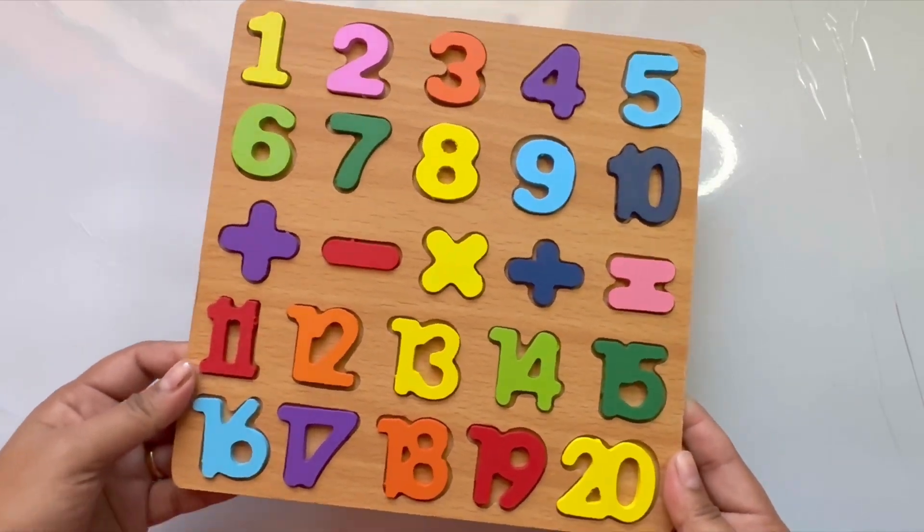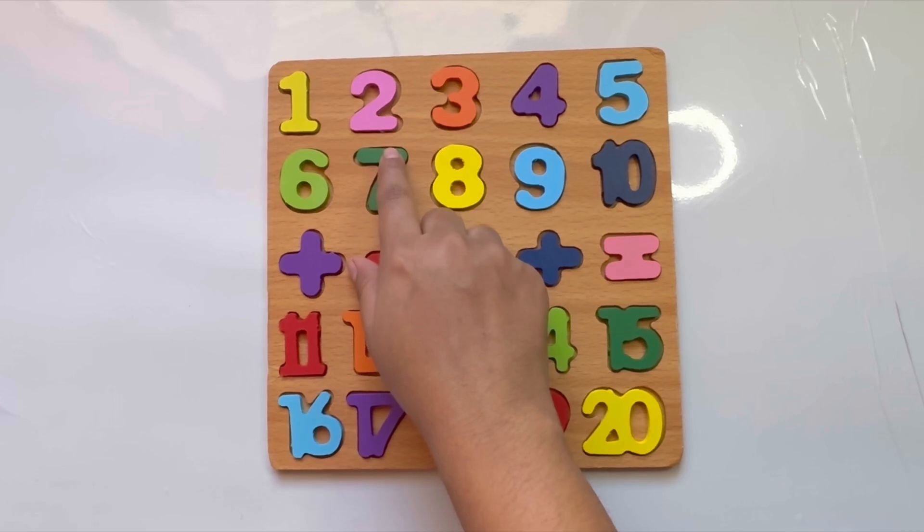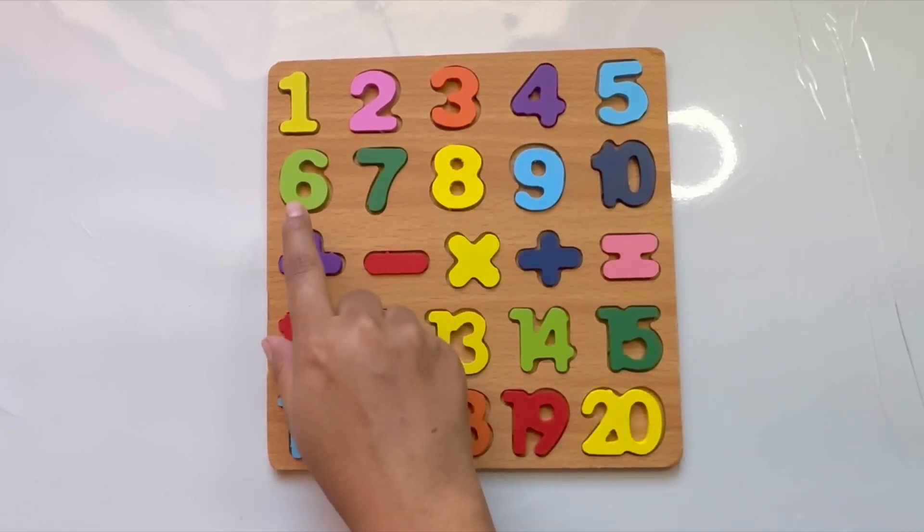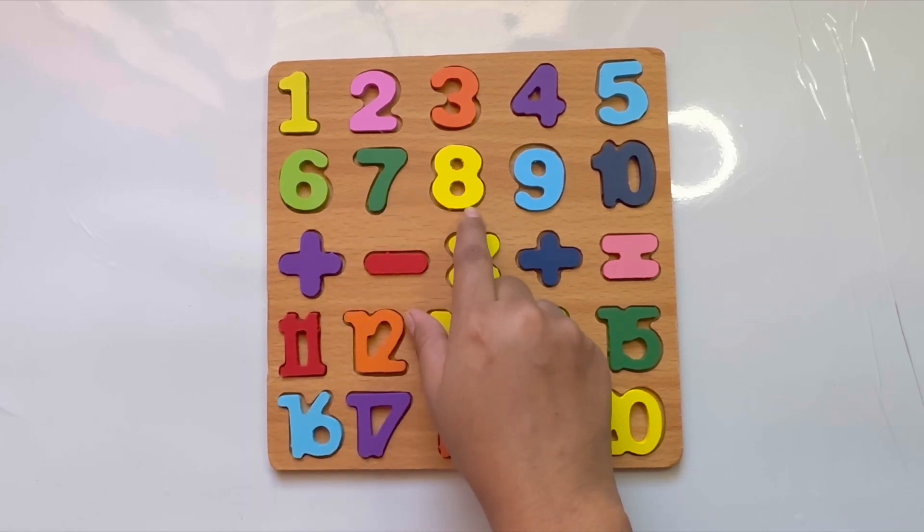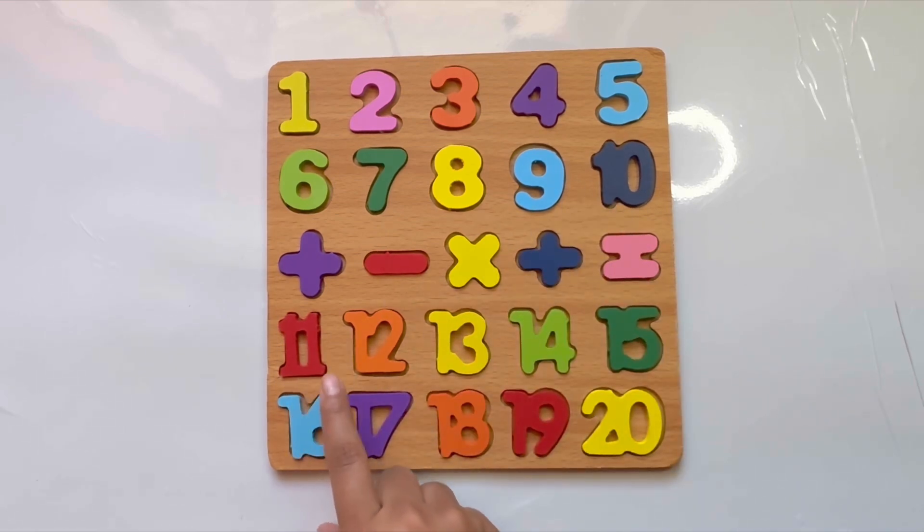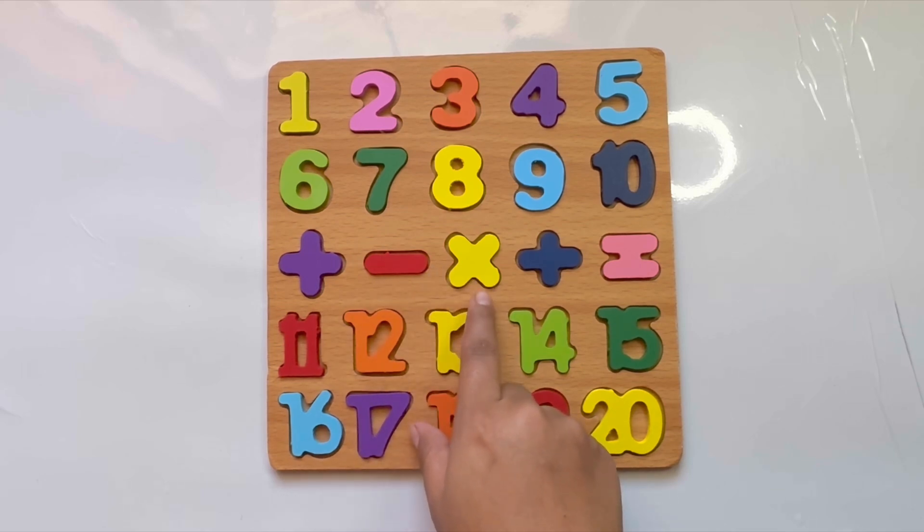Yes, now perfect. We are done. Let's read this number. One, two, three, four, five, six, seven, eight, nine, ten, eleven, twelve, thirteen, fourteen, fifteen, sixteen, seventeen, eighteen, nineteen, twenty, plus, minus, multiply, plus, equal to.